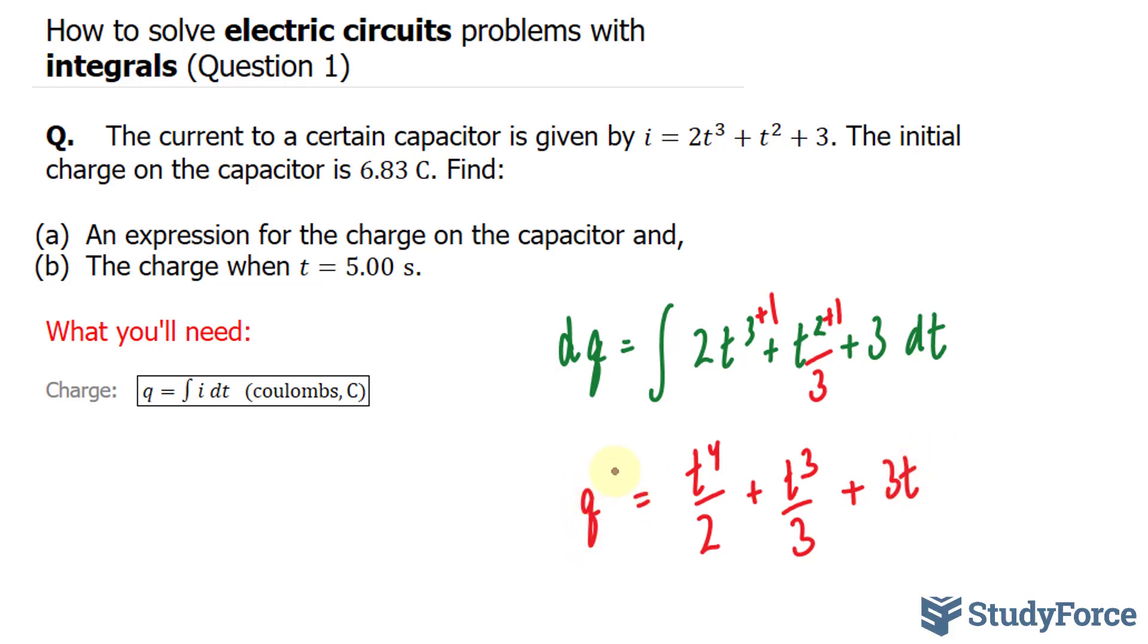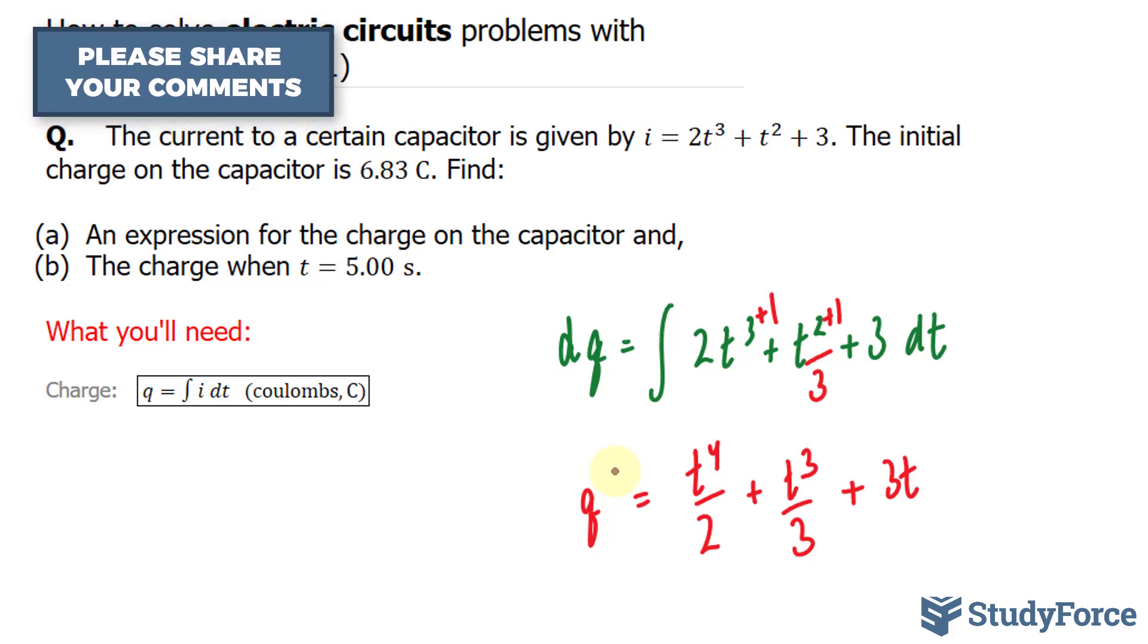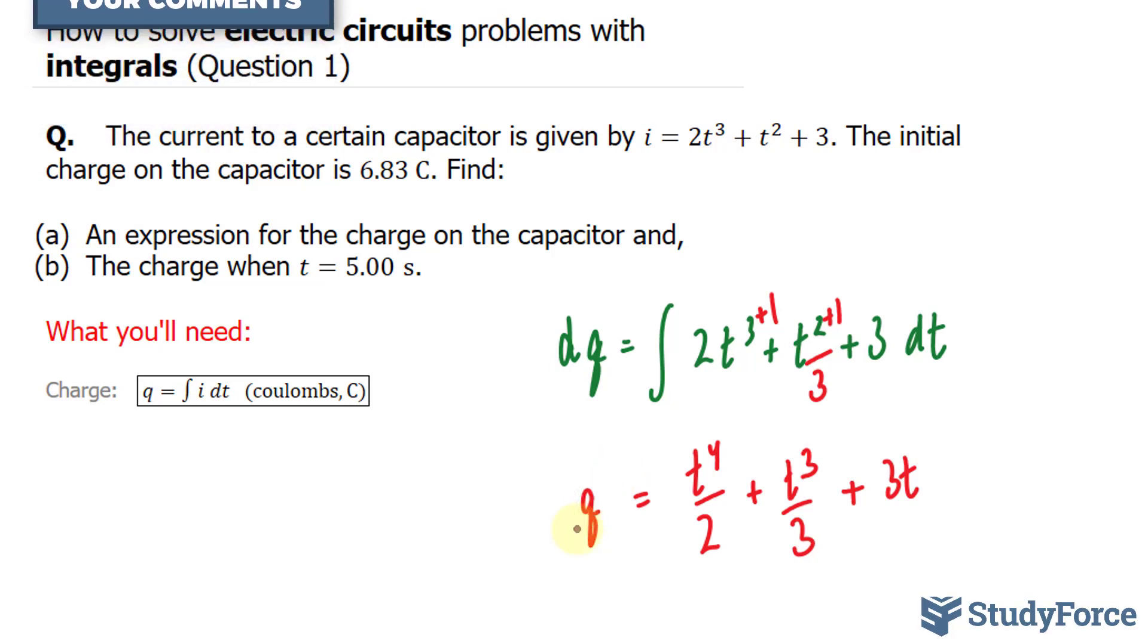To avoid confusion, we usually put +c for the constant, but because the units for charge is C (Coulombs), we'll use a different letter. Let's use k.